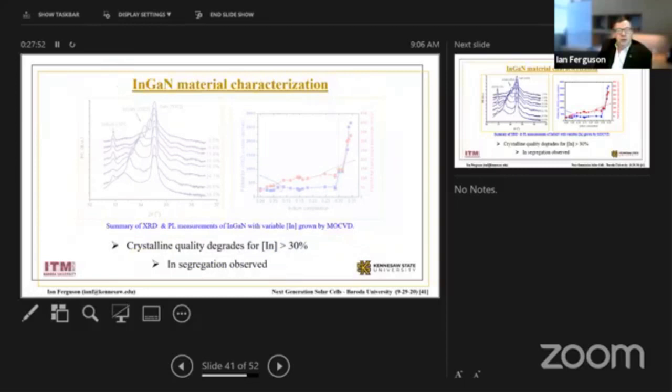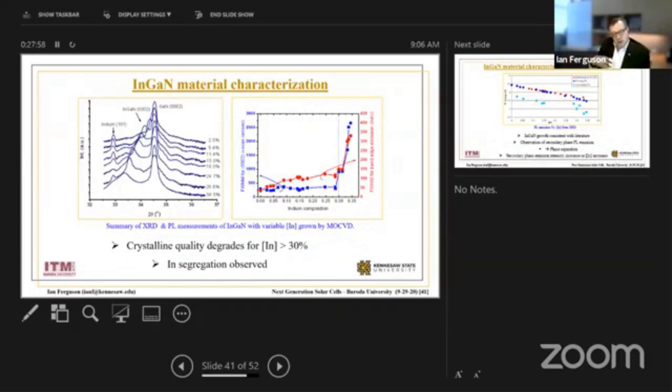The other issue you have with nitride materials is it tends to want to segregate during growth. So when you grow gallium nitride with indium nitride in it, and these two materials...